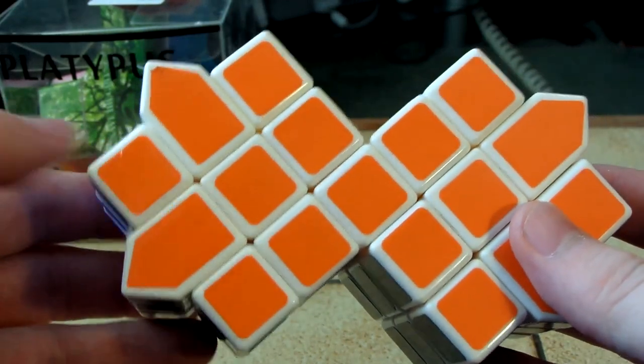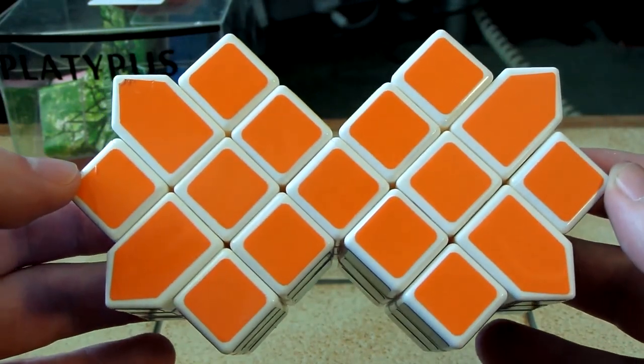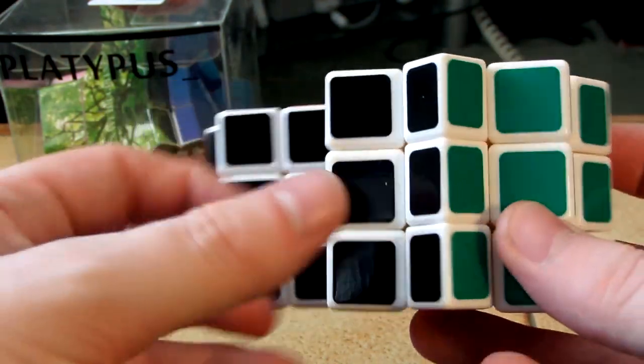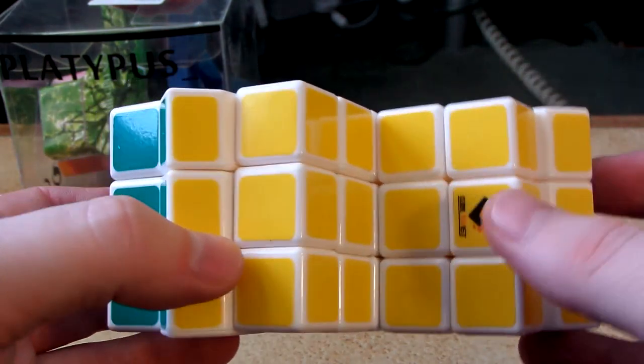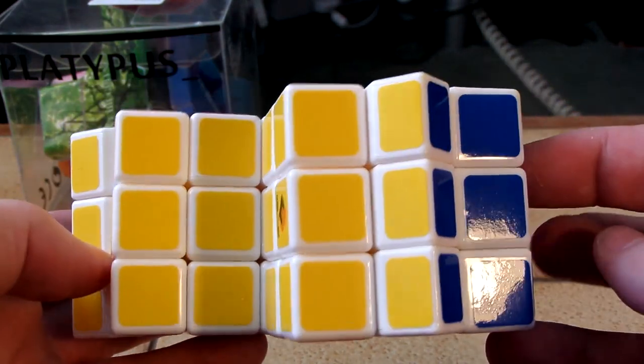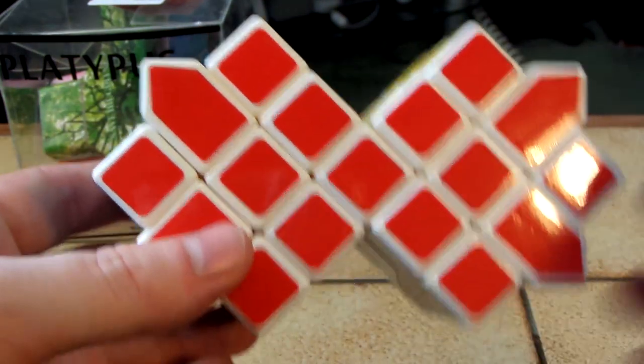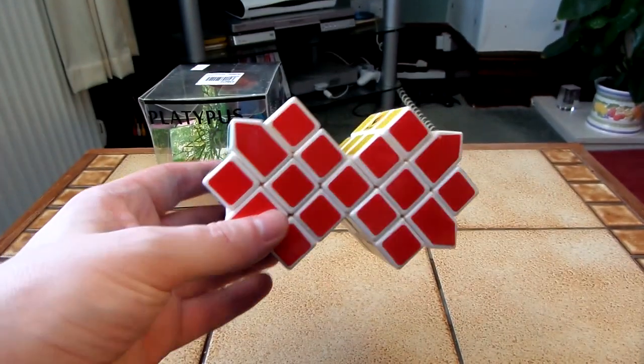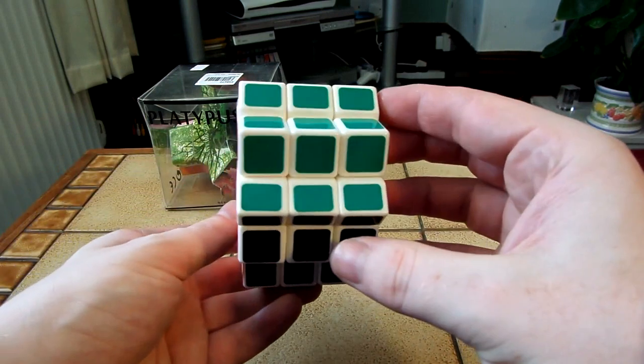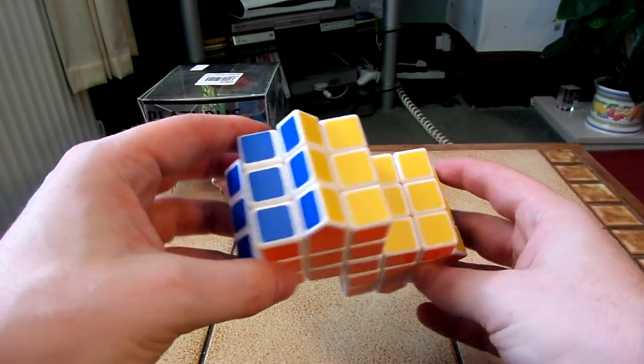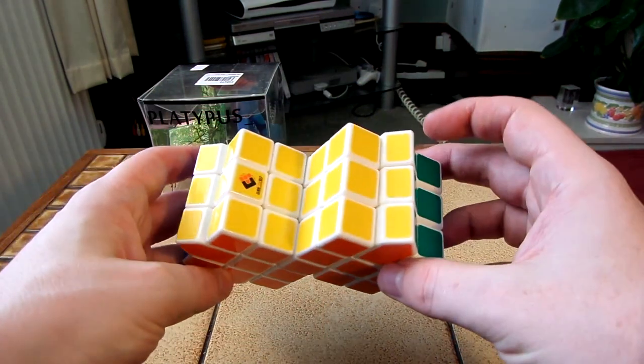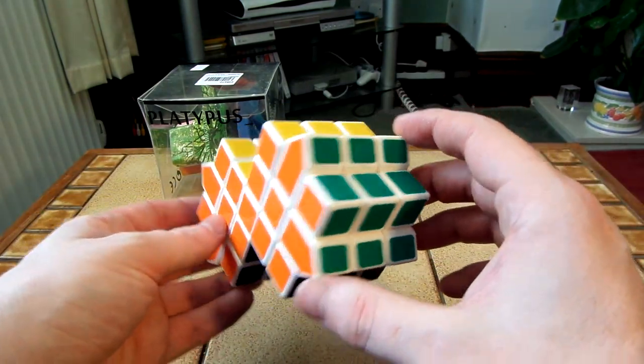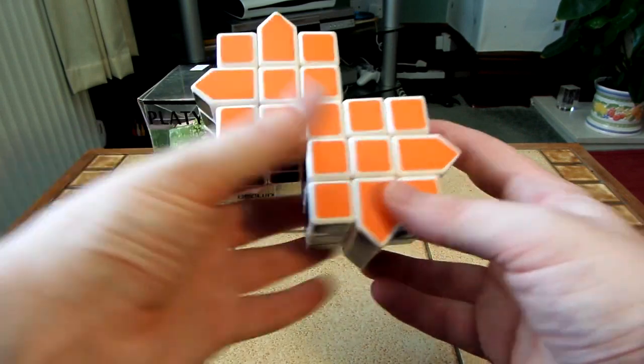So it's basically a Siamese 3x3 shape mod. There's a CubeTwist logo. So it's interesting the way they stickered it. I like the way the colour scheme is. Let's see what it turns like.